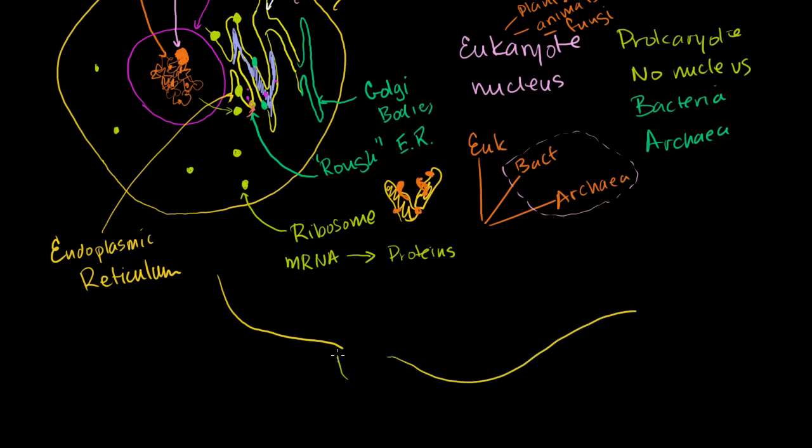In plants, you have things called lytic vacuoles, and those are really the same thing as a lysosome in terms of function—they're really big vesicles. A vacuole is just a big vesicle, a general term for a big membrane-bound organelle.